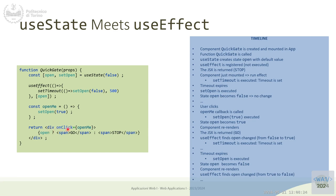Here's another example showing this kind of interaction. We have a state called 'open' — a gate can be open or closed. Let's start from the render: it renders a div that says 'go' or 'stop' depending on the value of the state 'open'. Initially the state 'open' is false. So at mount time this component will render 'stop'. We initialize a state with the value false and a useEffect that depends on 'open', plus a function 'openMe' used in the onClick event.